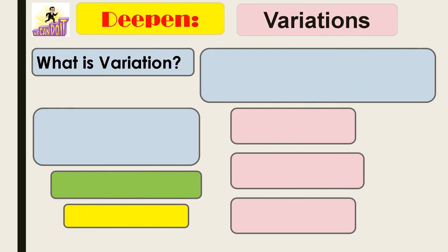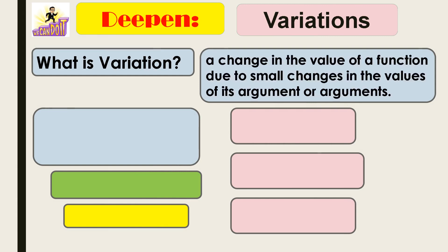So, variation. What is variation? A change in the value of a function due to small changes in values of its argument or arguments.